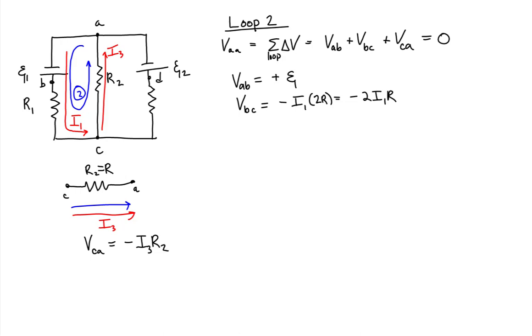Again, the minus sign is there because every time you evaluate the potential difference across a resistor in the direction of the current, that resistor consumes potential difference. In other words, we are going from higher potential to lower potential. So this is why we have minus I3R2 for the product of current in resistor 2 and the resistance of resistor 2. This is equal to minus I3R.